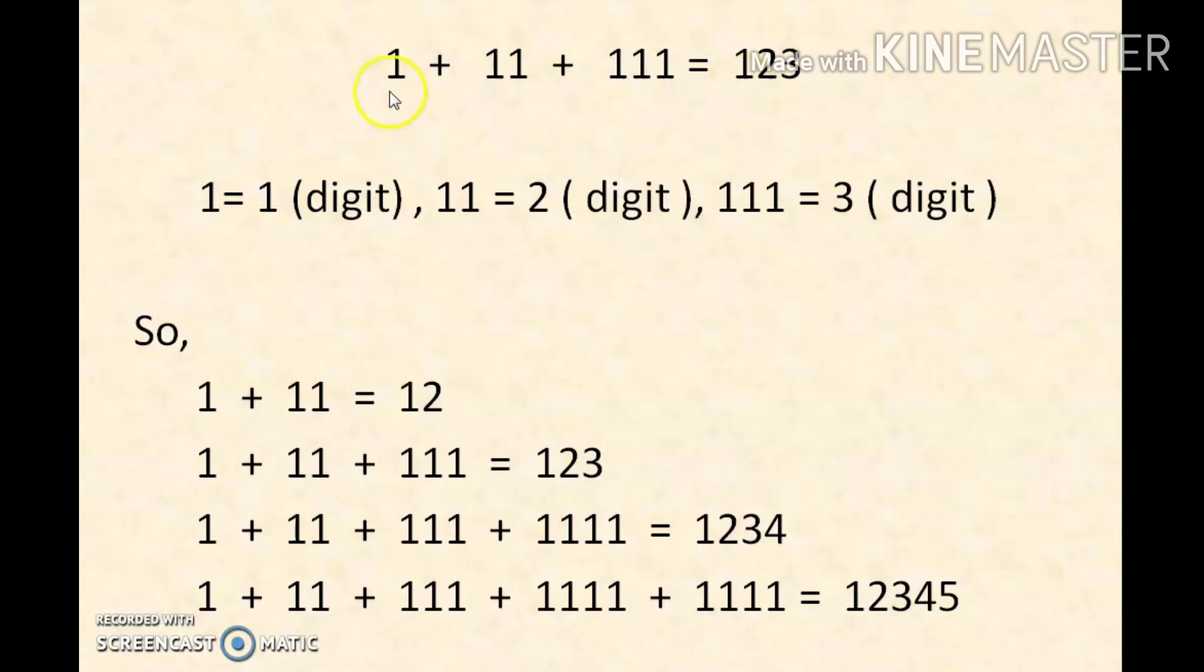First we have 1, that is 1 digit. Second we have 11, that is 2 digits. Third we have 111, that is 3 digits. Just count the number of digits and write them together. That is, we will get 123.